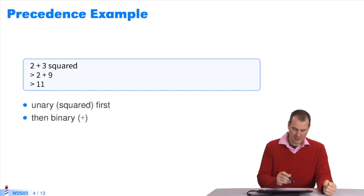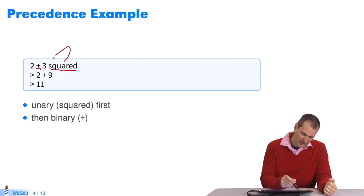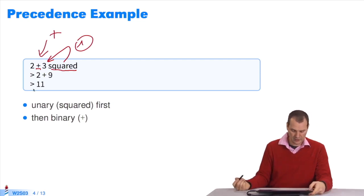Let's take one example. I have a unary message, squared, and a binary message, plus. The unary message wins. First, I send squared. Next, I send the message plus. It returns 11. It's right.